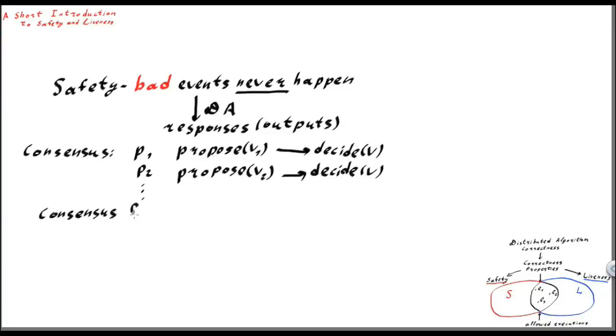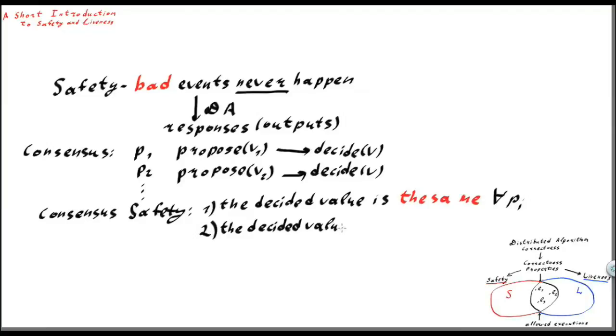A consensus safety property states that, first, the decided value is the same for all processes. And second, it states that the decided value should be the value proposed by the same process. So a consensus safety property states that the responses to the processes, that is, the responses that return the decided value, will be in accordance with these two properties.